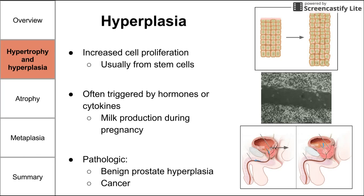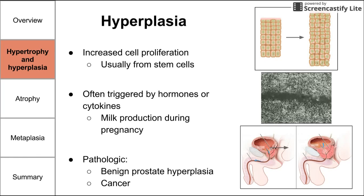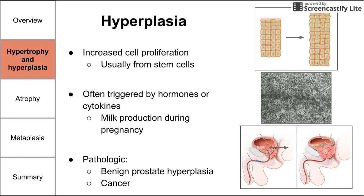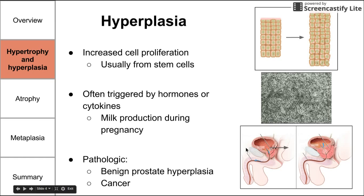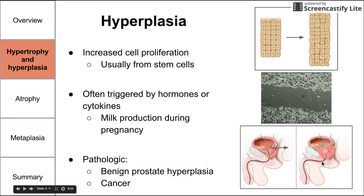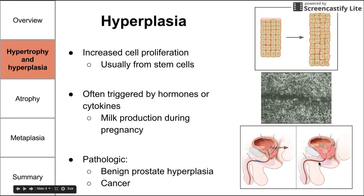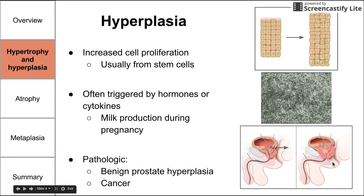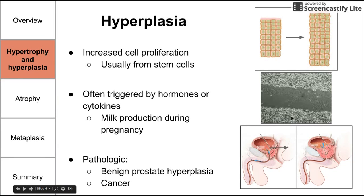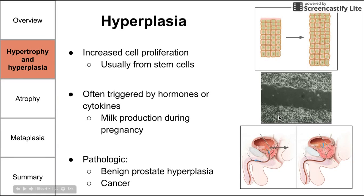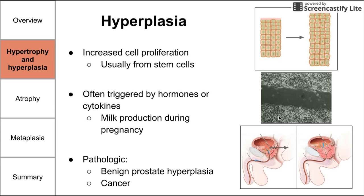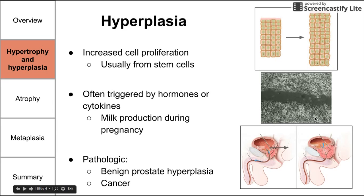Estrogen and progesterone also trigger the milk-producing alveolar epithelium for breastfeeding. Pathologic hyperplasia includes benign prostate hyperplasia, or BPH. This condition, more commonly known as prostate enlargement, often causes urinary issues in men. And of course, cancer metastases are a form of hyperplasia. This moving image here is a proliferation of skin cells from mice.